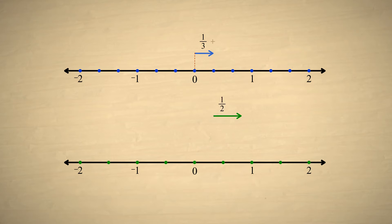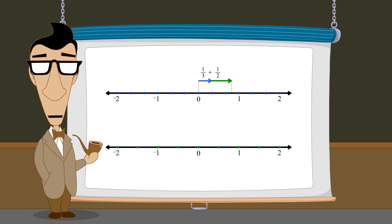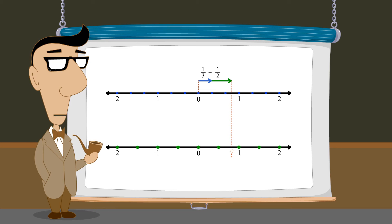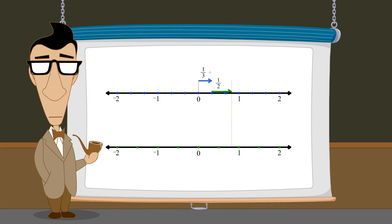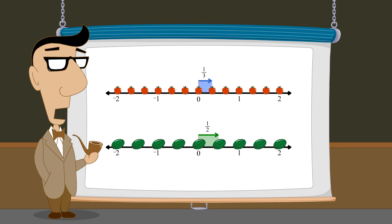Unfortunately, when we add these two fractions, the sum won't fit into either set of divisions. This is true whether we use three divisions per unit or two divisions per unit. Since each fraction is expressed using different-sized divisions, it's like trying to add apples and watermelons.